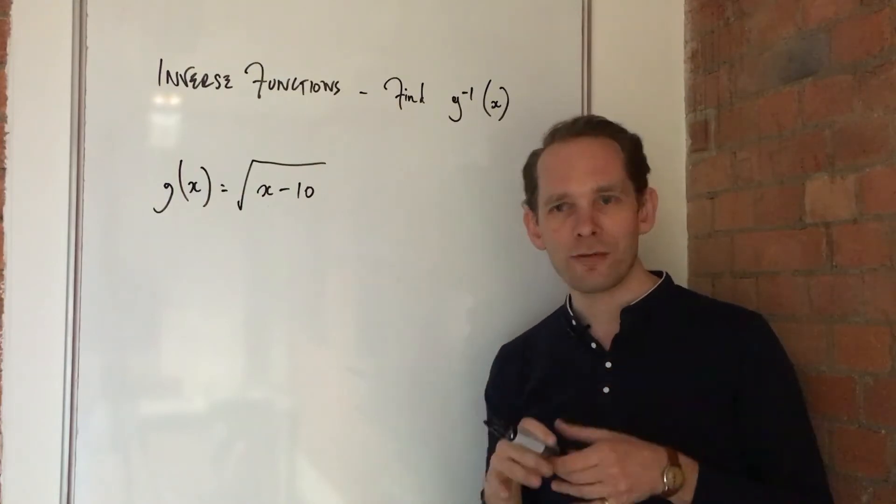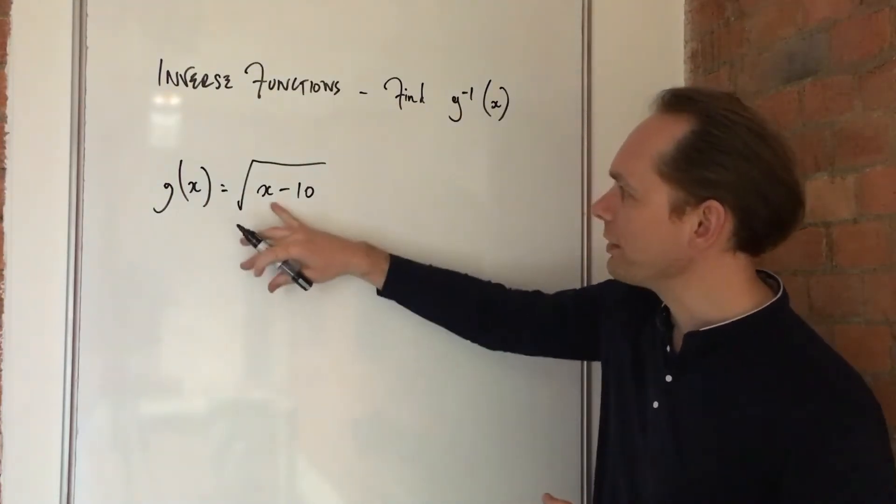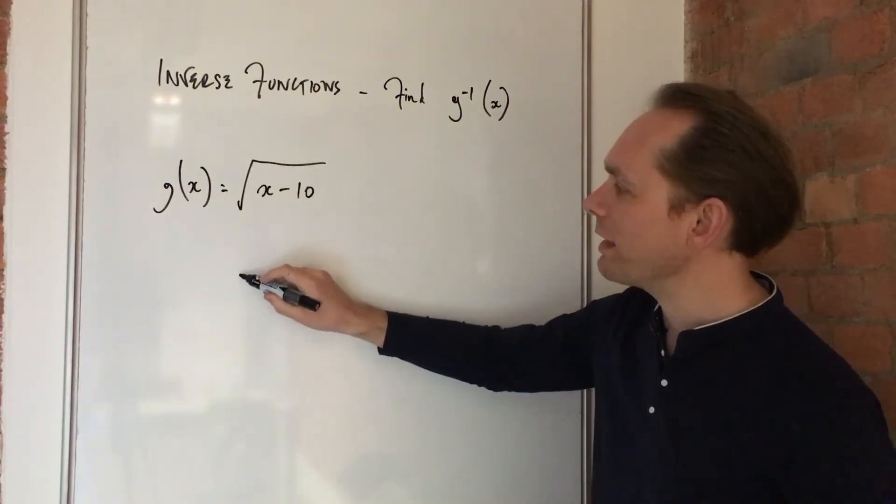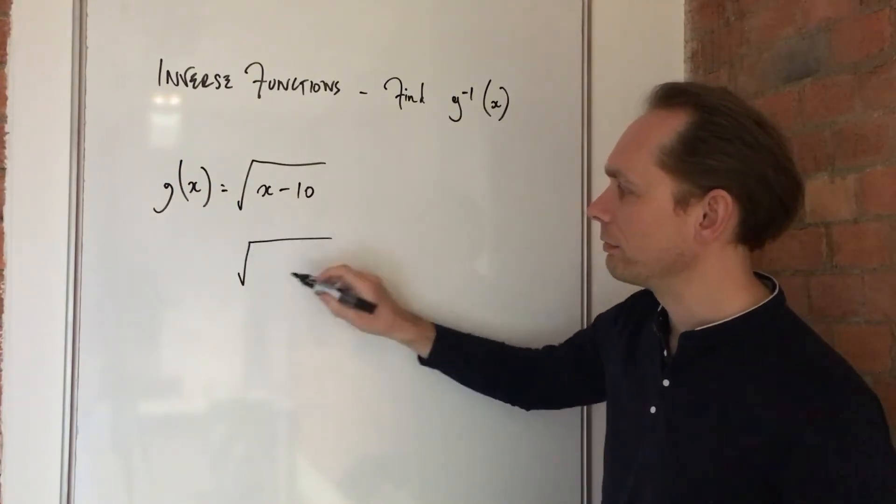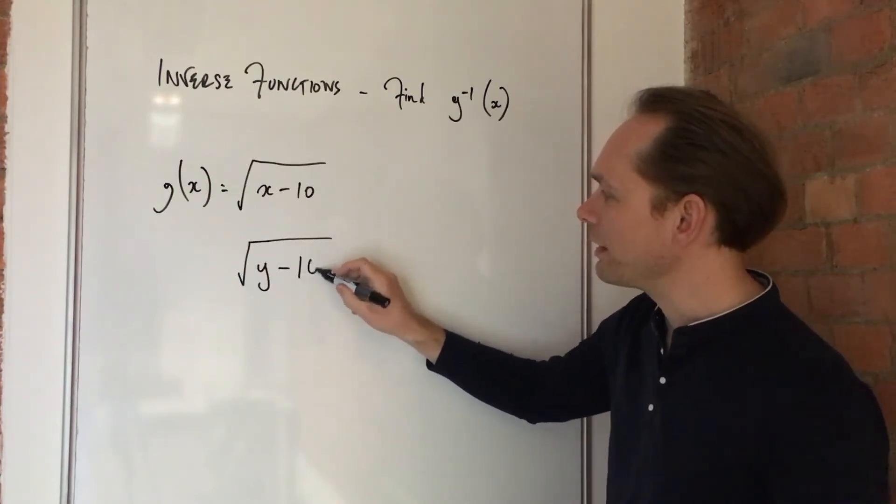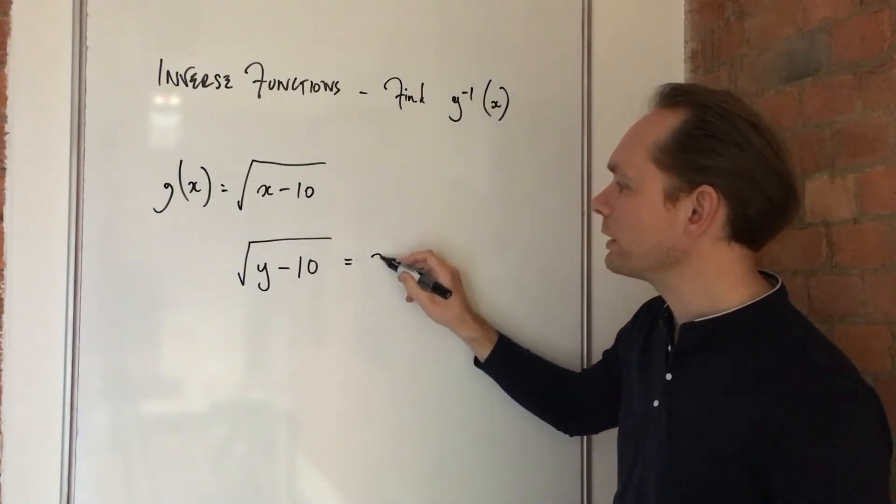There's a simple, kind of weird way of doing it I always recommend, which is take this function here and write it out again, but instead of an x, put a different letter. So let's say y. Let's not be too clever. y minus 10. And make that equal to x.